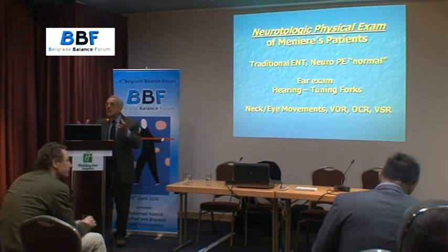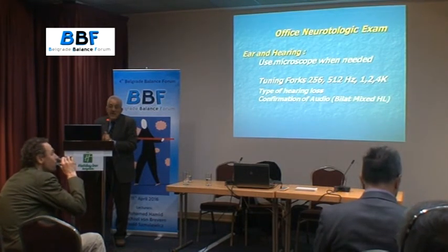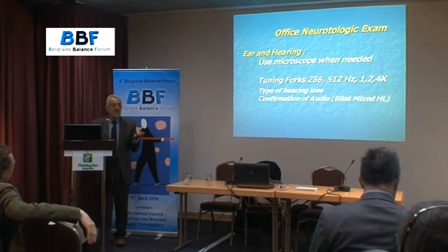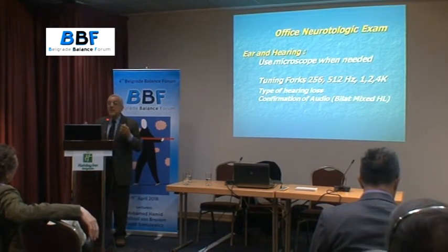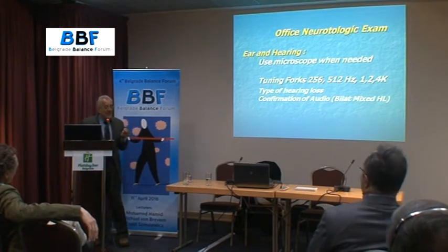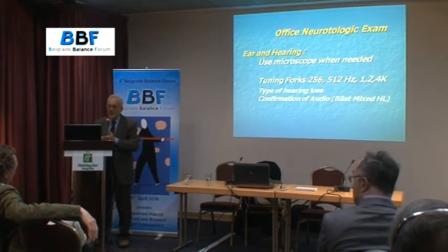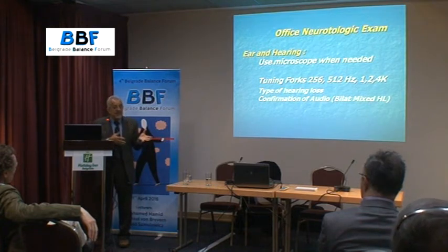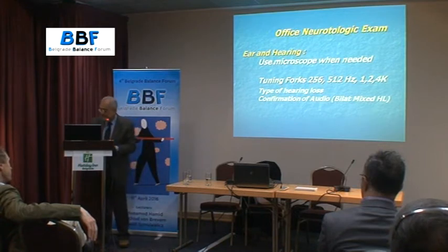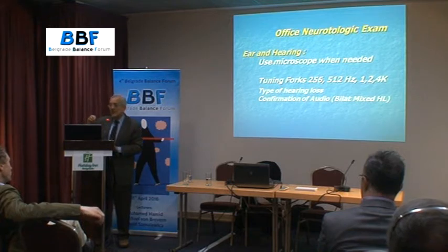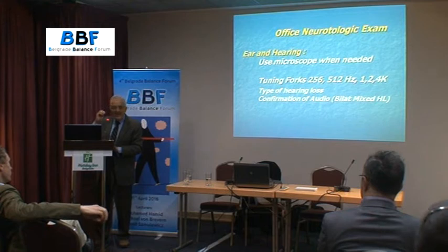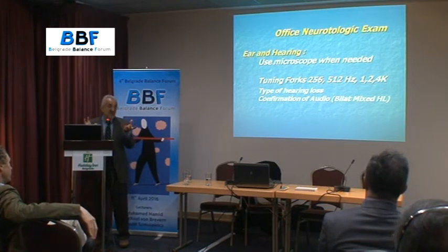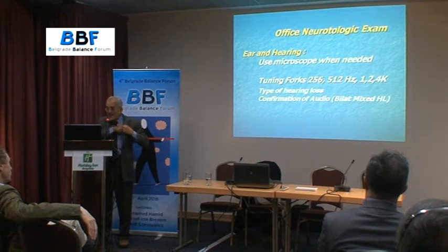For the hearing portion, if you have an ear that has been operated on, the use of a microscope is very important. Use the tuning forks — the tuning fork is still a very good tool to get an idea about hearing even if you don't have audiometry in your office. You can use the 256, 512, 1000, and 2000 Hz forks and get a pretty good idea whether you're dealing with conductive or mixed hearing loss. When I get bilateral mixed hearing loss, I use the tuning fork to confirm the audiometry because masking of bilateral mixed hearing loss can be very tricky.